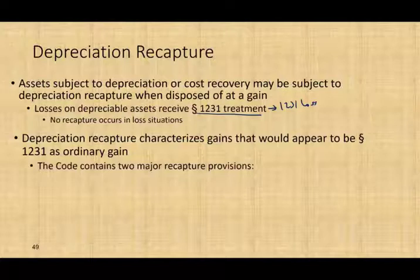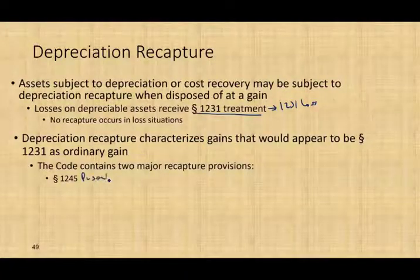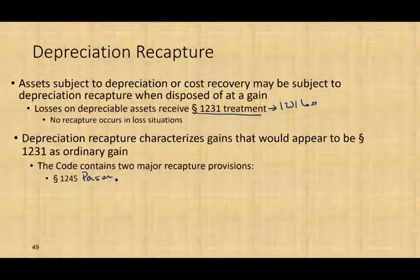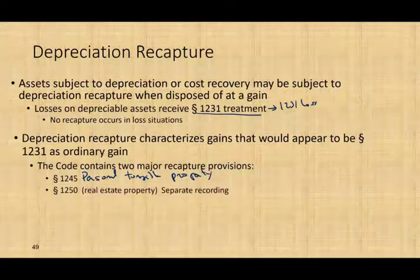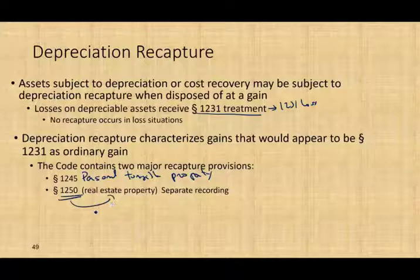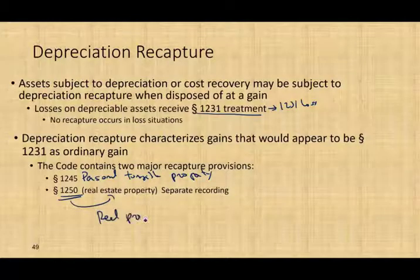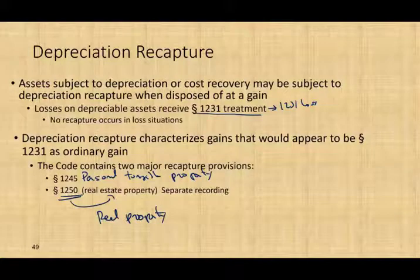The tax code contains two depreciation recapture sections. Section 1245 applies to tangible personal property — and also intangible, though we rarely deal with intangible. Section 1250 is for real property. The concept is the same, but the depreciation recapture provision applies to real property, and that will be covered in a separate recording.